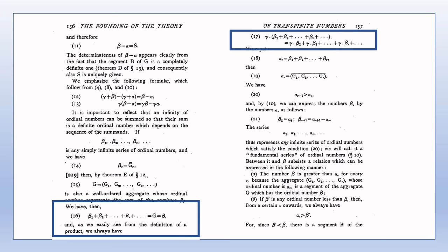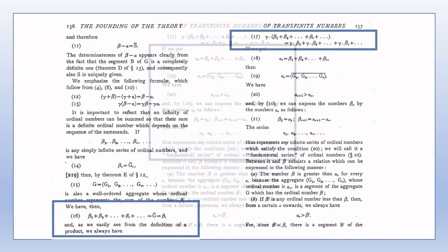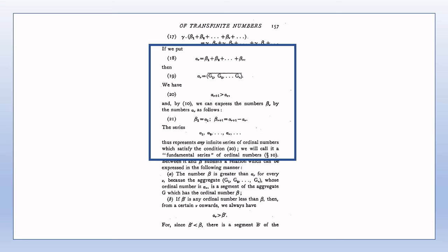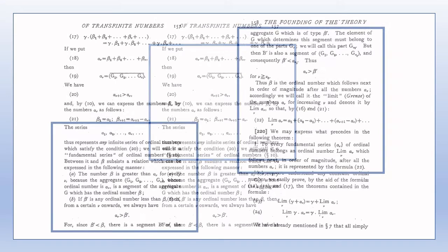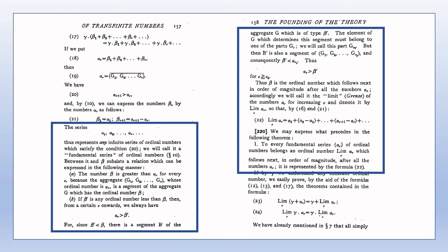We are justified in asserting that the aggregate G of page 156 is a well-ordered aggregate. The equality of point 17 can be shown by considering a suitable one-to-one correspondence between appropriate aggregates. The argument from points 18 to 21 shows that any simply infinite series of ordinal numbers gives rise to a fundamental series of ordinal numbers. The inequality of point 20 can be justified since the union aggregate G₁G₂…Gᵥ corresponding to αᵥ is a segment of the union aggregate G₁G₂…Gᵥ₊₁, which has ordinal number αᵥ₊₁. This inequality also justifies the expression αᵥ₊₁ − αᵥ in point 21. The bottom of page 157 and top of page 158 show that β satisfies the conditions of Section 10 on page 131, identifying β as the limiting element of the fundamental series of ordinal numbers just derived.